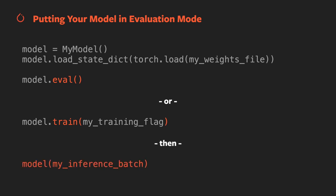You may find this useful if your code already contains a flag that indicates whether you're doing training or inference. Once you're in eval mode, you can start sending your model batches of data for inference. We're going to talk about different methods for deploying your model for inference, but for all of them, making sure your model is in evaluation mode is your first step.